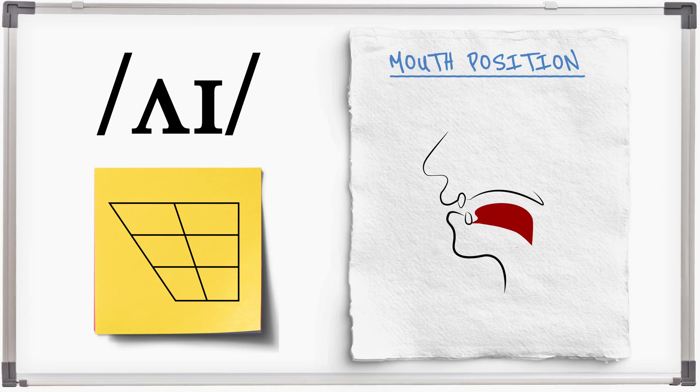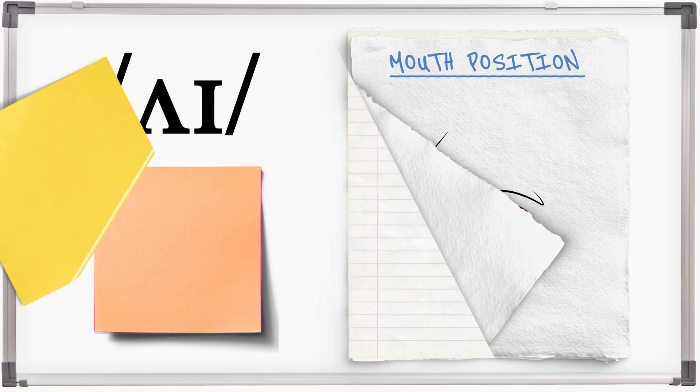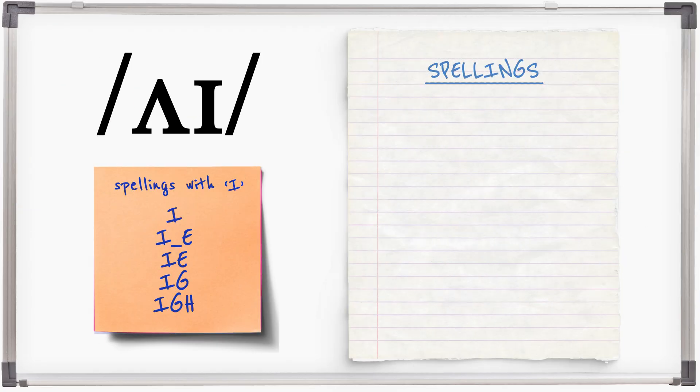I is a diphthong vowel sound that starts in a mid-open unrounded position and moves towards a front near-close near-front position. I has many spellings, some with I.